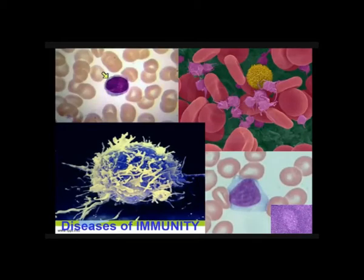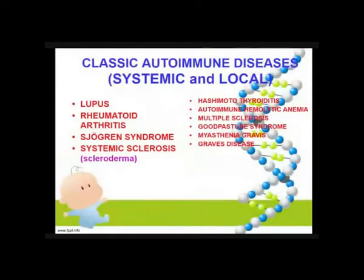These are the diseases of the immune system. It is divided into systemic and local or localized immune disorders. For systemic, we have lupus, or your SLE, your systemic lupus erythematosus, and then rheumatoid arthritis, your Sjogren's syndrome, and then your systemic sclerosis, or we usually call it your scleroderma.